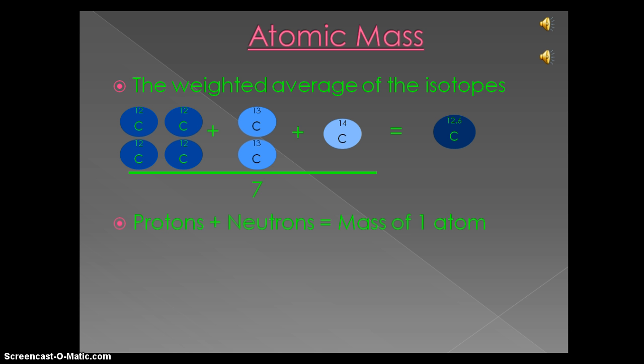Remember, protons plus neutrons equals the mass of one atom. Using carbon again as an example, we have 6 protons plus 6 neutrons equals a total mass of 12. This will be measured in atomic mass units.